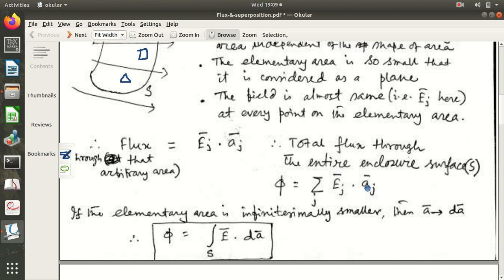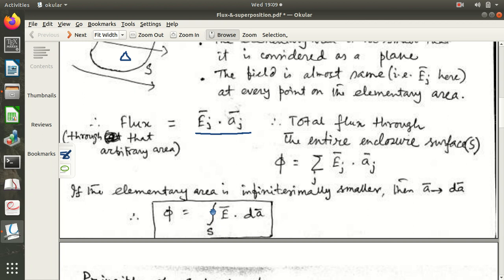And you know, if we consider AJ to be infinitesimally small, it has to be small, it is not smaller. So, if we consider infinitesimally small, then A is denoted by DA, because this is infinitesimally small, and the flux will be through that area EJ dot AJ. If the area is infinitesimally small, then this AJ will be written as DAJ, that means, this A will be replaced by DA.